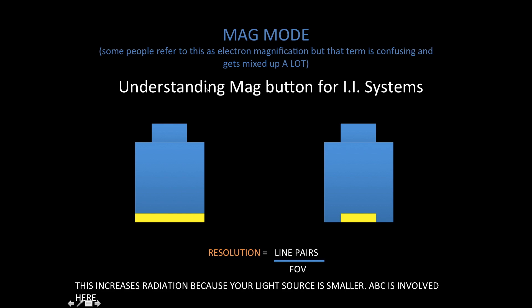The size will correspond more to a one-to-one ratio, therefore you don't have the minification that happens as part of our normal process, in which you go from a bigger surface area to a smaller surface area. The resolution formula is line pairs over field of view. You can see why magnification not only magnifies your image — since you're displaying a smaller anatomical surface on a bigger screen, your entire screen will be occupied by this smaller anatomic section — but also you have an increase in resolution by decreasing the field of view. That is something very specific to image intensifying tubes.